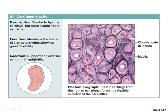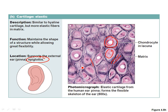Elastic cartilage can spring back to its original shape. You'll see it in the external ear — flip it and it returns to shape — and also in the epiglottis, the little flap that covers the trachea when you swallow so food goes down the esophagus instead. It then snaps back so you can keep breathing. On a micrograph it looks similar to hyaline with lacunae and chondrocytes, but instead of a glassy appearance it has an elastic matrix making it more resilient.